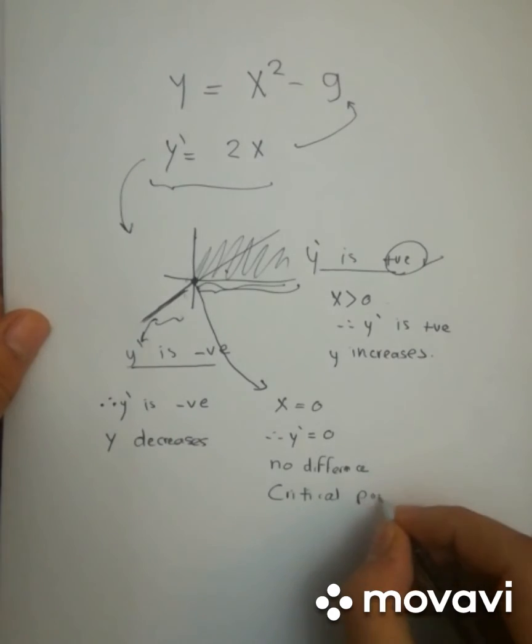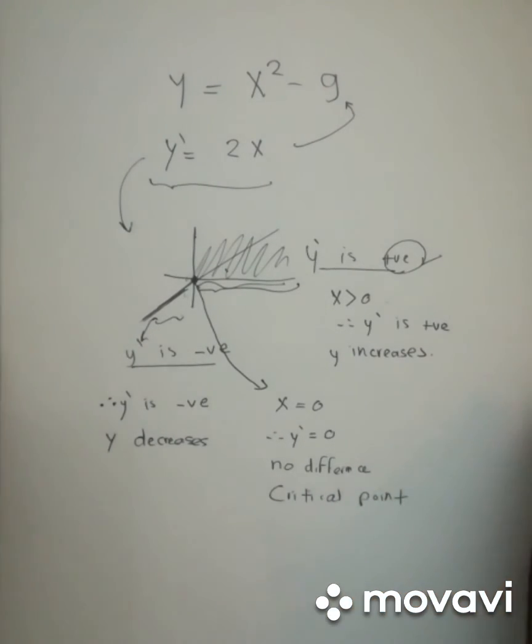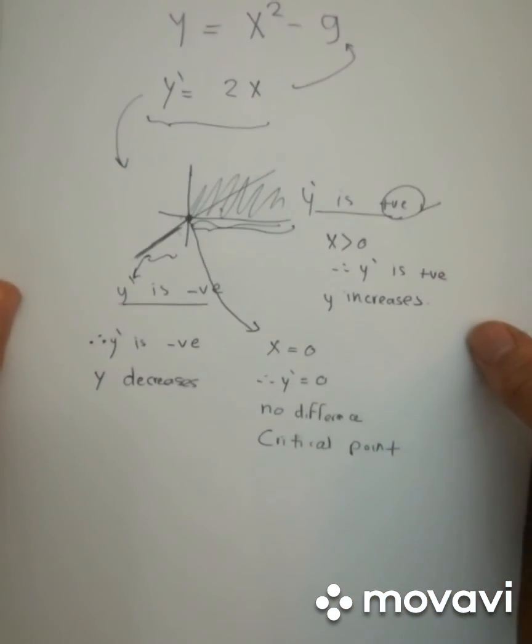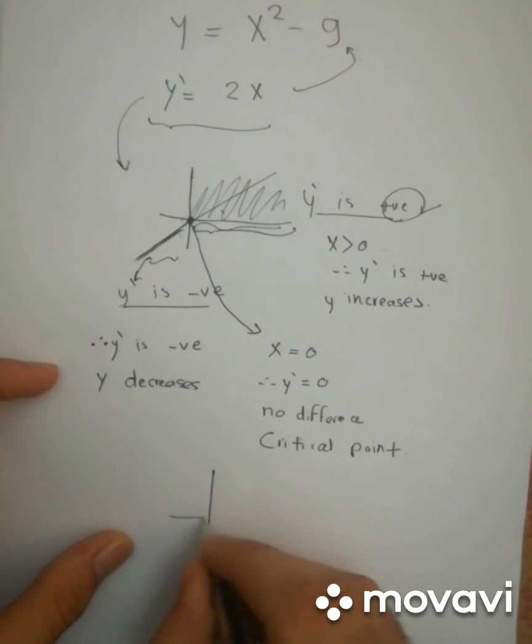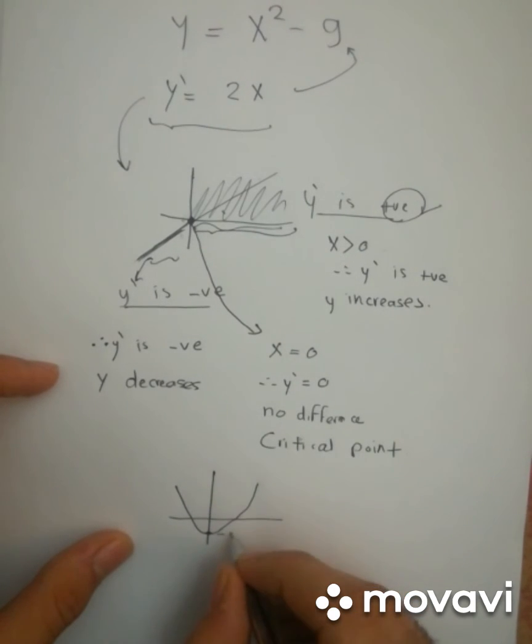And so this is going to make sense once we draw it, and so let's try to draw this. And so if we draw the function x squared minus 9, we are going to get something like this. And this is going to be negative 9. And so the vertex is negative 9.